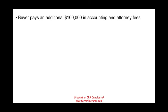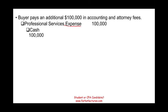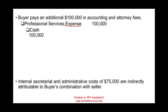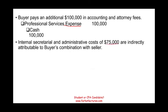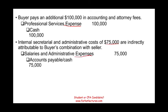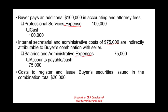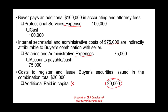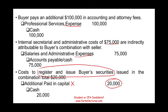For example: if the buyer pays $100,000 in accounting and attorney fees related to the business combination, we debit professional service expense and credit cash. If we incur internal secretarial and administrative costs of $75,000 directly related to the business combination, that's also an expense — debit salaries and administrative expense, credit cash or accounts payable. However, if we incur $20,000 to register and issue buyer securities in the business combination, we debit additional paid-in capital — not expense — and credit cash. Make sure you're aware of these rules, especially for the CPA exam.